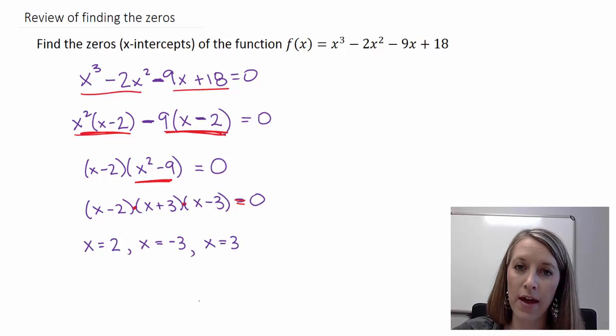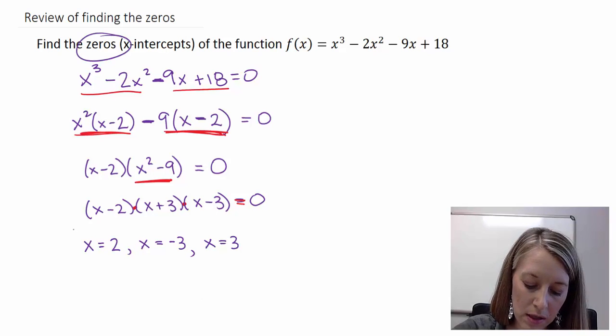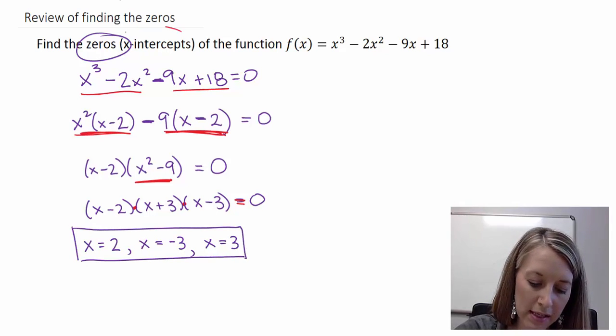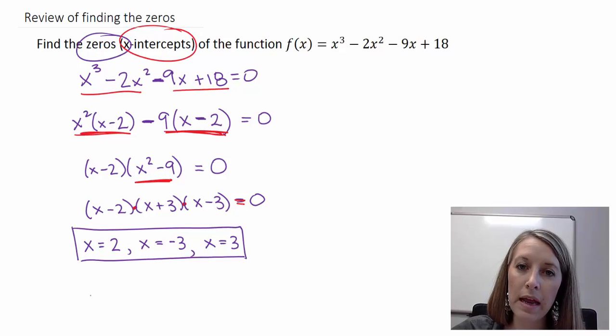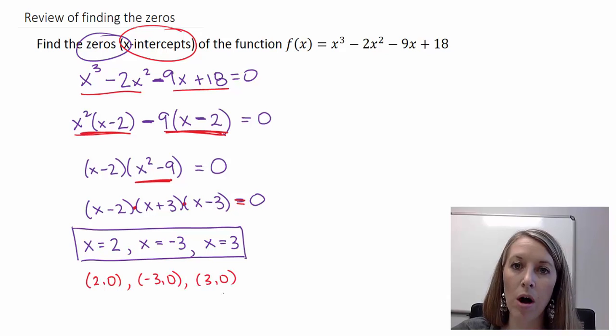If the problem specifically asked for the zeros, then this is the correct format. If the problem specifically asked for the x-intercepts, then we should put it in intercepts or order pair format. So 2, 0 is my first intercept, negative 3, 0, and then positive 3, 0 are my last intercepts. This is where my graph intercepts the x-axis. So this reviews how to find zeros, how to find x-intercepts, and it reviews your factor by grouping technique.